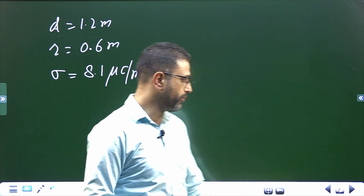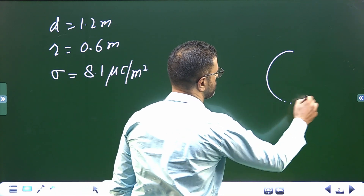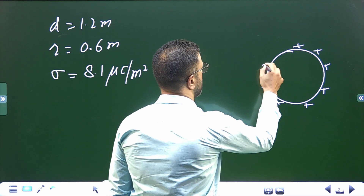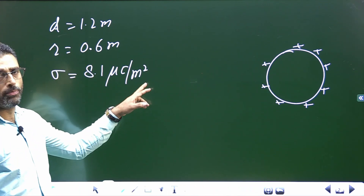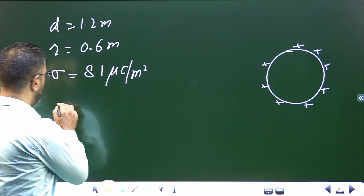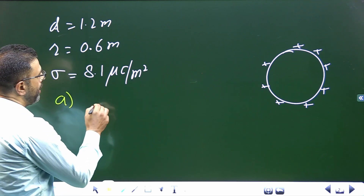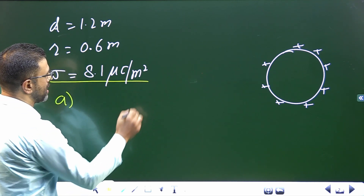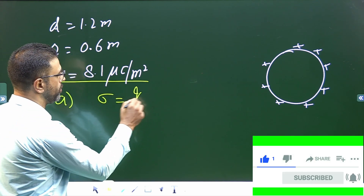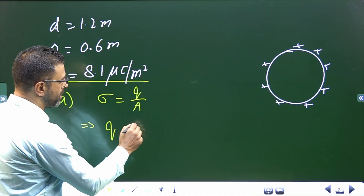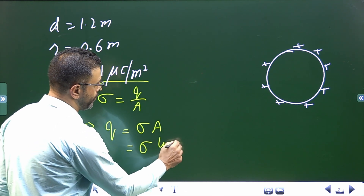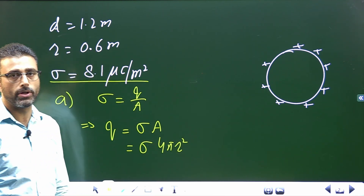Very simple — we have a metallic sphere with some positive charge. Surface charge density is given as 8.1 micro coulomb per meter square and radius is also given. We have to find the total charge of the sphere — that is Part A. If sigma is the surface charge density, meaning charge per unit area, then total charge equals sigma times total area, and total area of a sphere is 4πr².